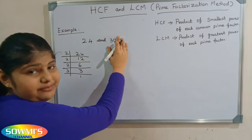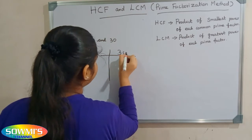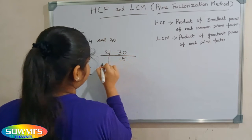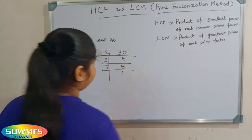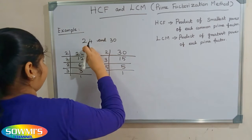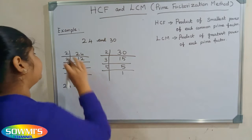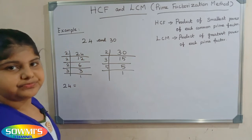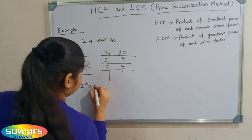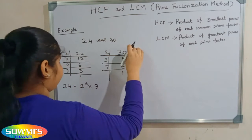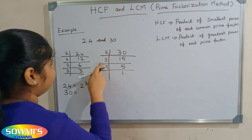Next we will find the prime factors of 30. 2 fifteens are 30, 3 fives are 15, 5 ones are 5. The prime factors of 24 are 2 × 2 × 2, which can be written as 2 cubed, multiplied by 3. The prime factors of 30 are 2 × 3 × 5.